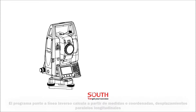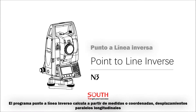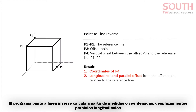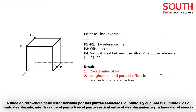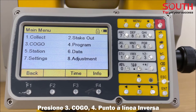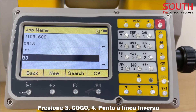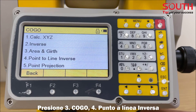The program 'Point to Line Inverse' calculates from measurements or coordinates the longitudinal and parallel offsets. The reference line should be defined by two known points: point one and point two. Point three is the offset point, while point four is the vertical point between the offset and the reference line.